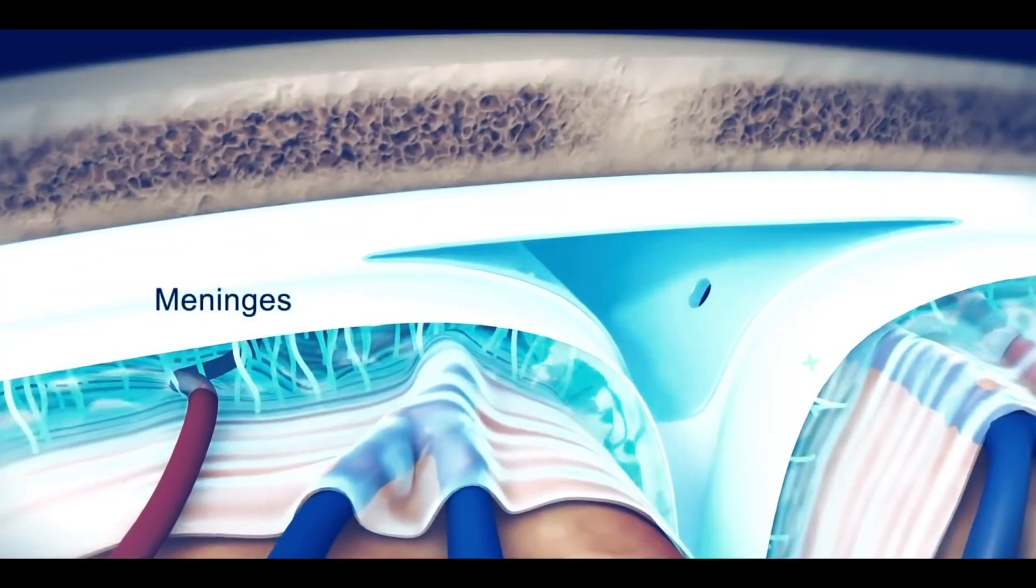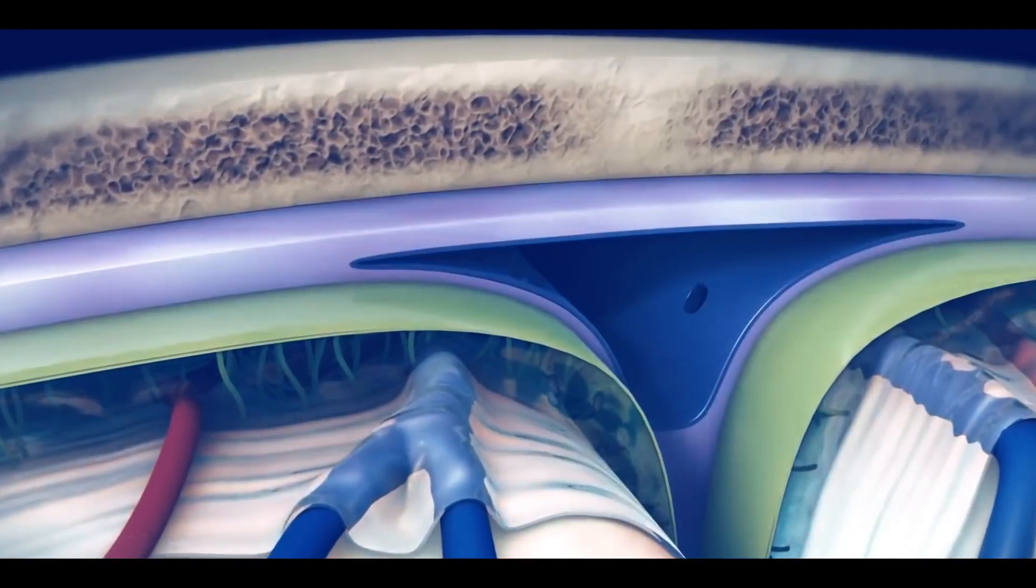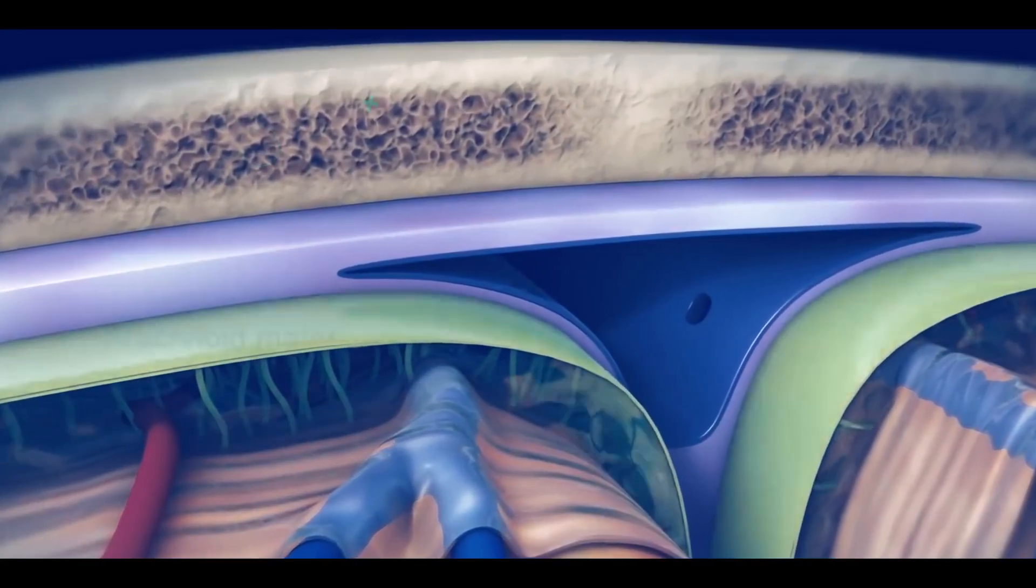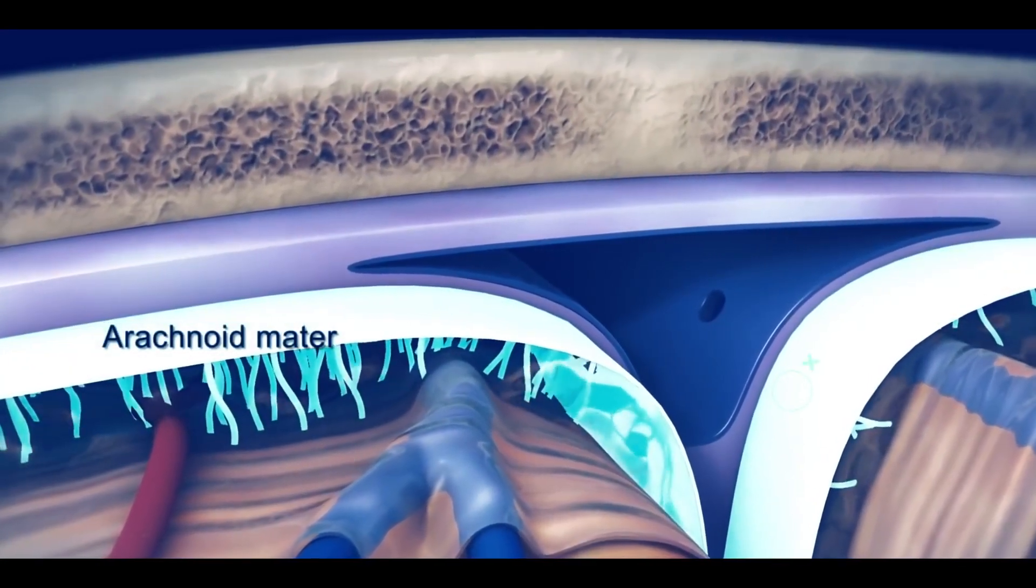The brain covering is called meninges, which consists of three layers. Among these three layers, this middle layer is called arachnoid matter.